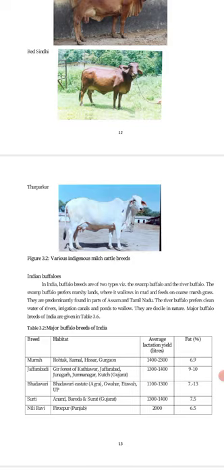The river buffalo prefers clean waters of rivers, irrigation canals, and ponds. They are docile in nature. Now we will look at the major buffalo breeds of India.